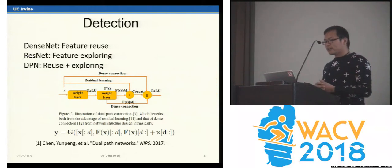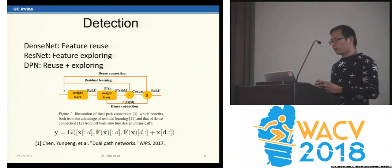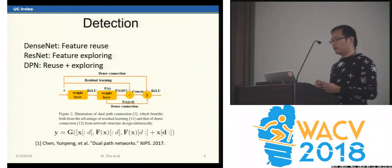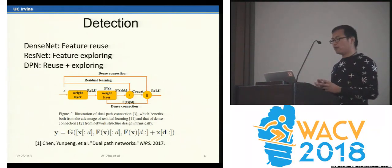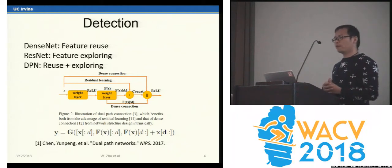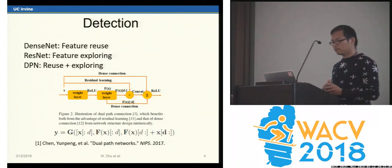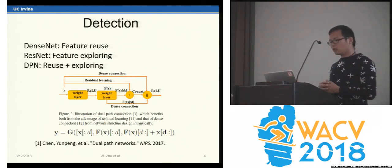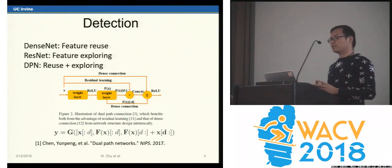We design a three-dimensional dual path network to build an effective three-dimensional convolutional network. Dual path network takes both the advantages of DenseNet and ResNet for feature reuse and feature exploration. Dual path network achieves better performance than ResNet with fewer parameters.